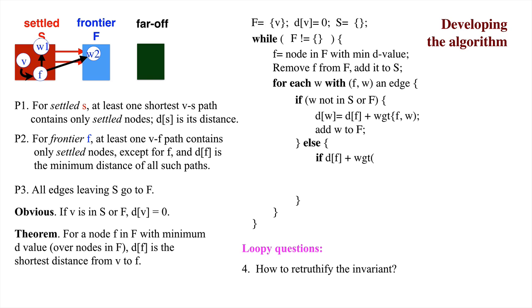If its distance, d sub f plus the weight of the edge from f to w is less than d sub w, a shorter path has been found. So change d sub w accordingly. Note that if w is in the settled set, like w1, nothing will change.